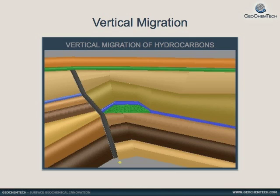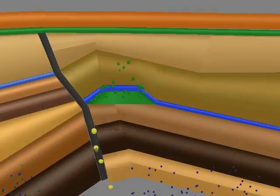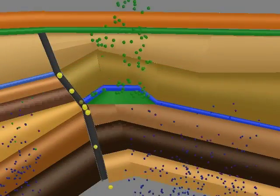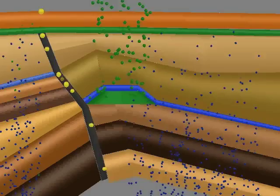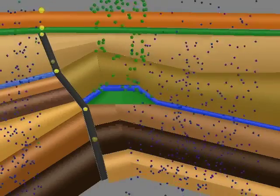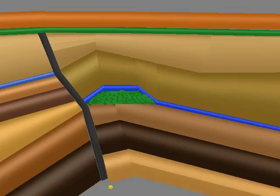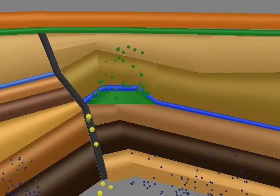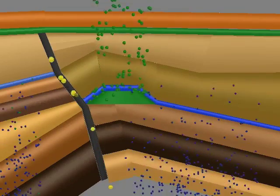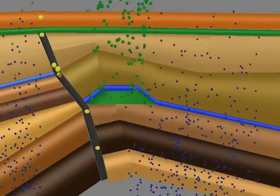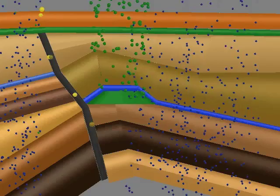The concept of micro-seepage is important to the vertical migration of hydrocarbons. With micro-seepage, the reservoir seal is still effective, but the reservoir pressure and high hydrocarbon concentration creates a strong, natural driving force.